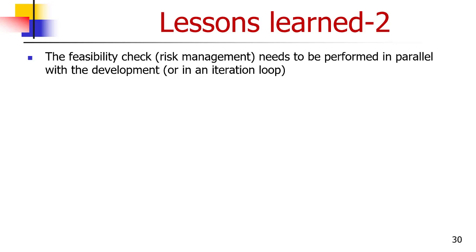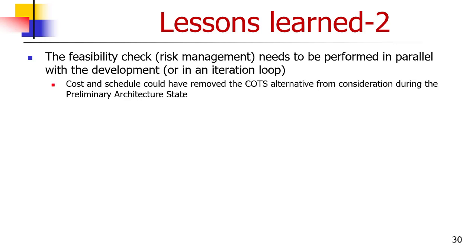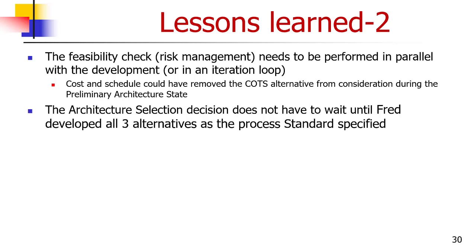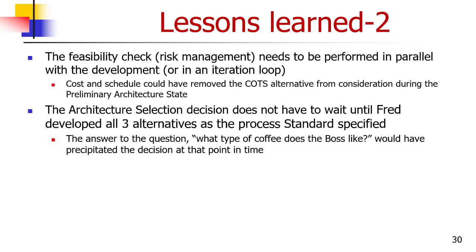More lessons learned — these are more generic. The feasibility check needs to be performed in parallel with the development or in an iteration loop. For example, cost and schedule could have removed the COTS alternative from consideration during the preliminary architecture state. The architecture selection decision doesn't have to wait until Fred developed all three alternatives as the process standards specified. Once Fred asked the team leader what kind of coffee does the boss like, the decision was made — there was no need to follow the process and create the other architectures unless the feasibility study showed that Fred could not deliver the type of coffee the boss liked within the time limit. If there was a power cut, the only alternative architecture that would have helped was a commercial off-the-shelf product brought in from outside.